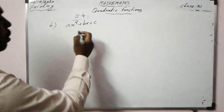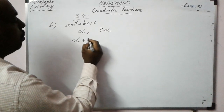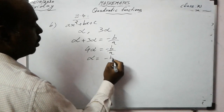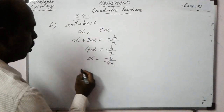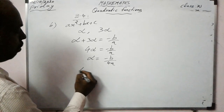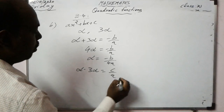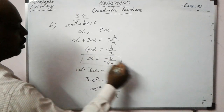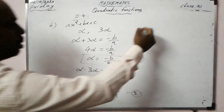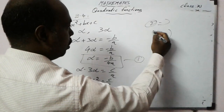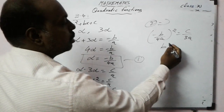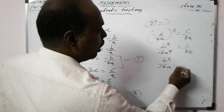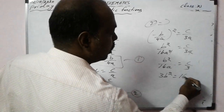Second part: one root is thrice the other. Let roots be alpha and 3·alpha. Sum: 4·alpha = -b/a, so alpha = -b/(4a). Product: 3·alpha² = c/a, so alpha² = c/(3a). Substituting: (-b/(4a))² = c/(3a), giving b²/(16a²) = c/(3a).